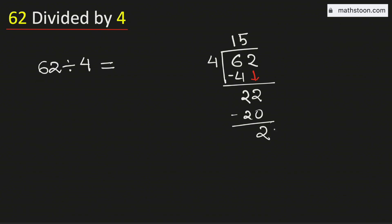So in this case, we will borrow one 0 and for that we need to put a decimal here. And we know that 4 times 5 is 20. Subtract we get 0.